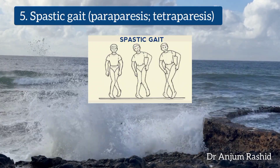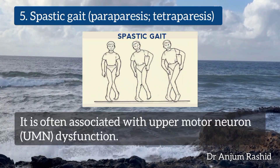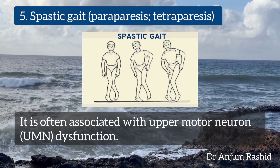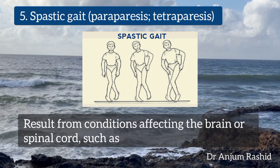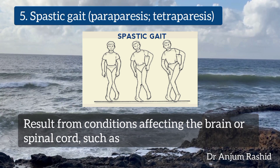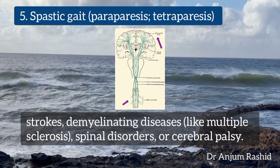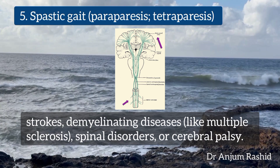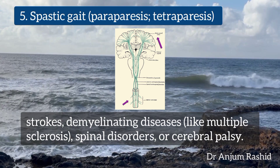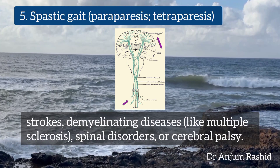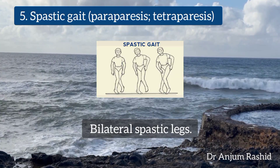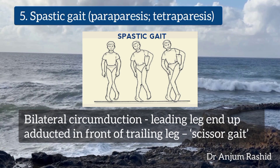The fifth type is spastic gait, or paraparesis or tetraparesis. It is often associated with upper motor neuron lesions and can result from conditions affecting the brain or spinal cord, such as strokes, demyelinating disease like multiple sclerosis, spinal disorders, or cerebral palsy.